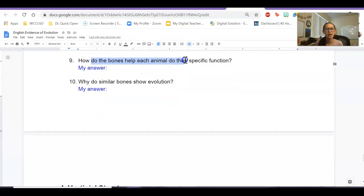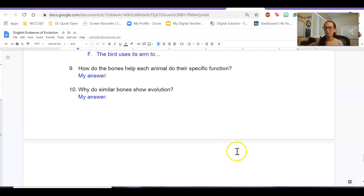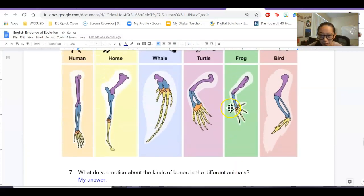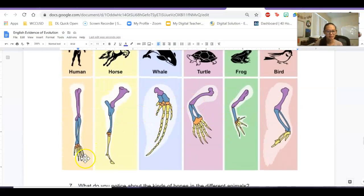And then how did the bones help each animal do their specific function? So this question is kind of hard. We need to look back at the pictures. So let's see here. How come the human bones look like this? And how come the whale bones look like this? So maybe we can talk about how the humans need a long arm so they can reach and hold things and they need their fingers.